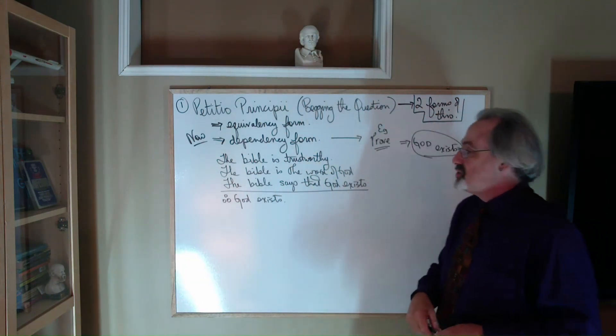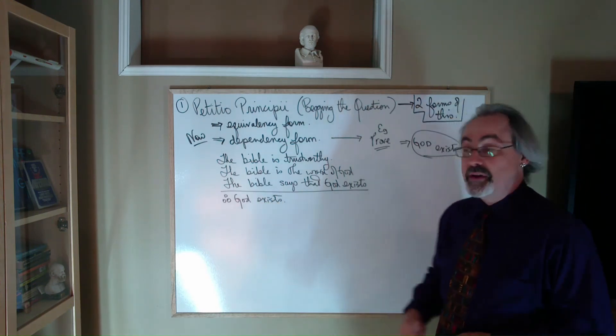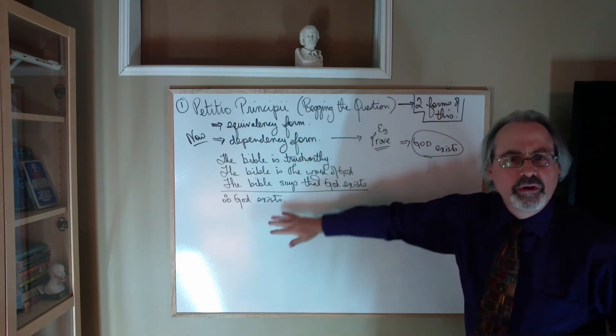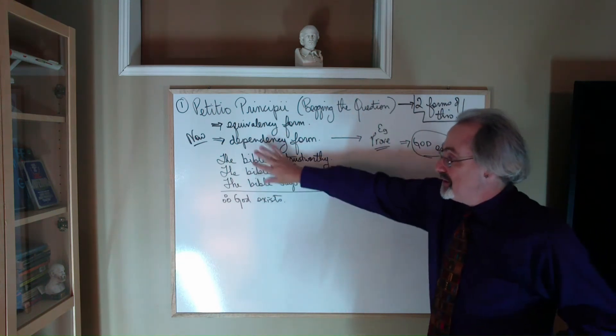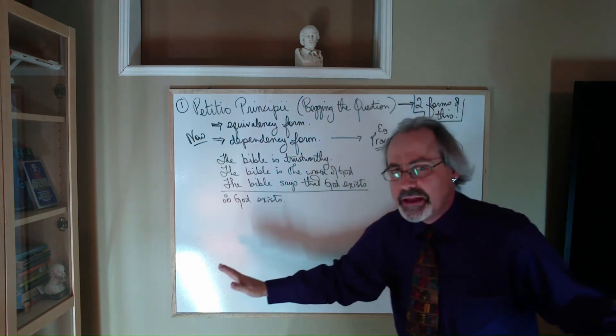So basically, what you're doing in this one is you are presupposing what you're trying to prove. In other words, the premises are depending, they're leaning on, to get this off the ground, you're leaning on the conclusion. That's really the opposite way it should go. It's that the conclusion flows out of the premises, not that the premises are dependent on the conclusion.